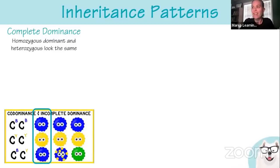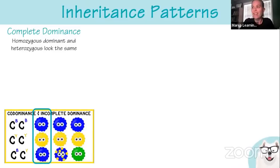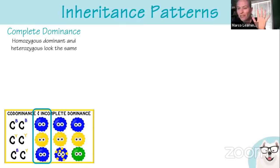First thing: inheritance patterns. There are a couple of different types of dominance. Just because something's dominant doesn't mean that it's the common trait. For example, five fingers is actually a recessive trait. The dominant trait would actually be something called polydactyly, where there's an extra finger — more than five.